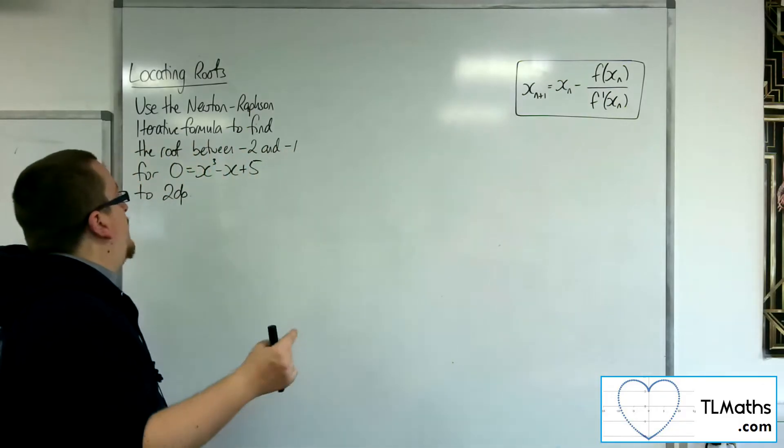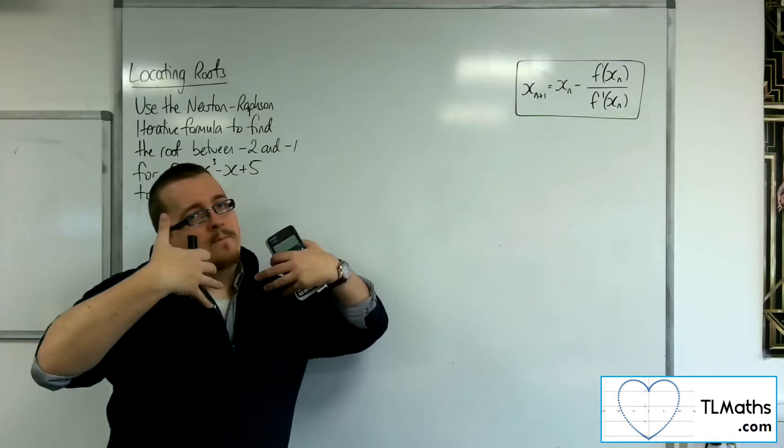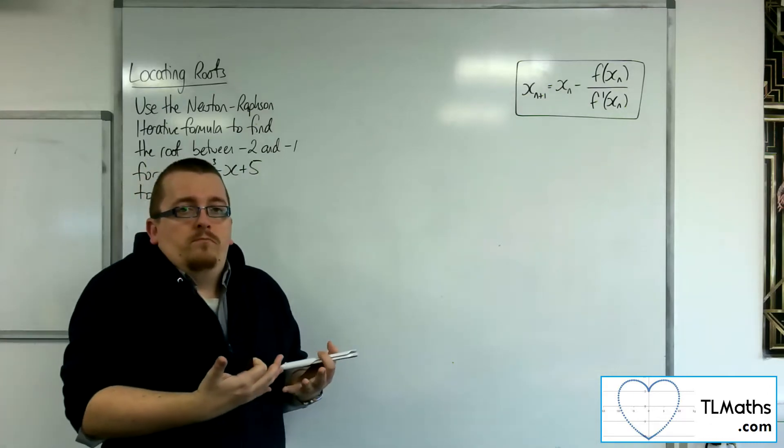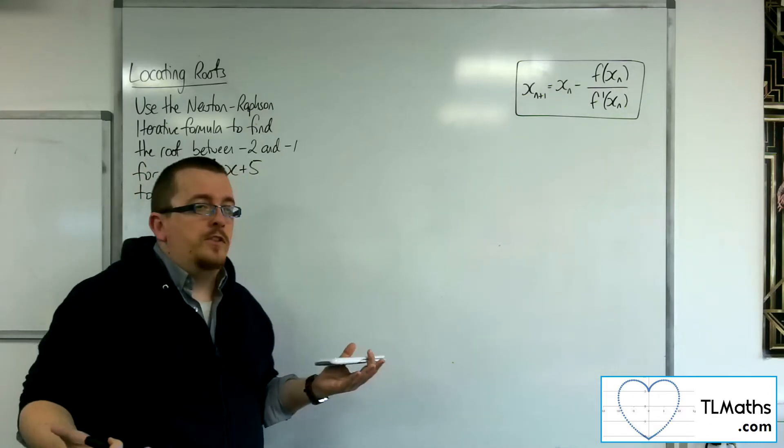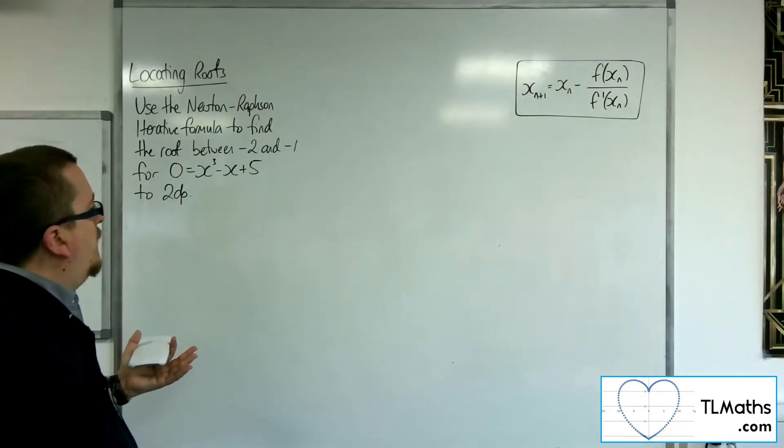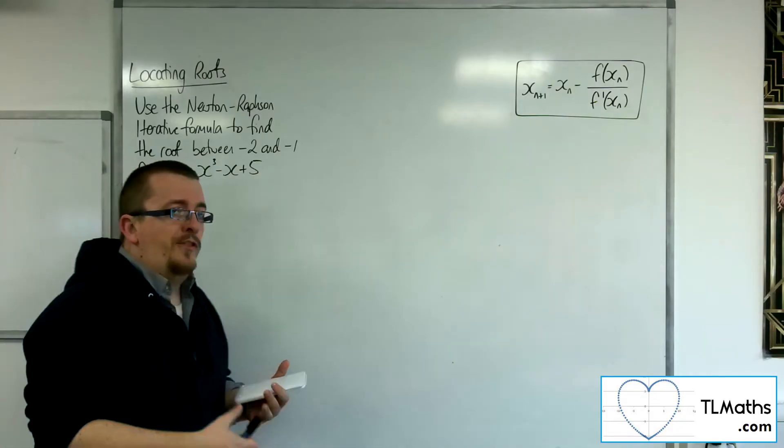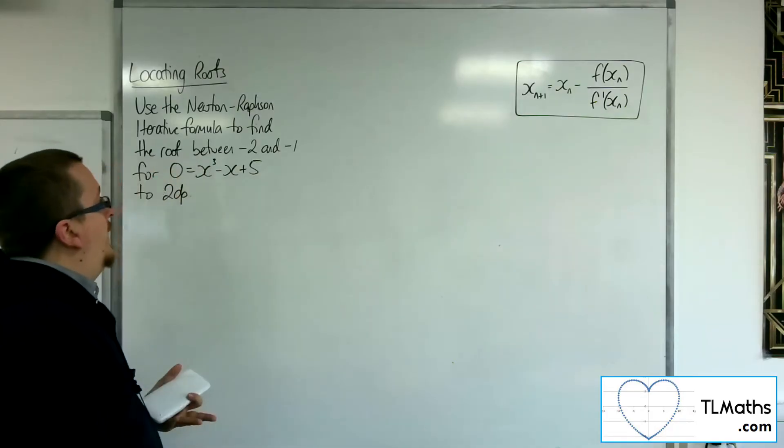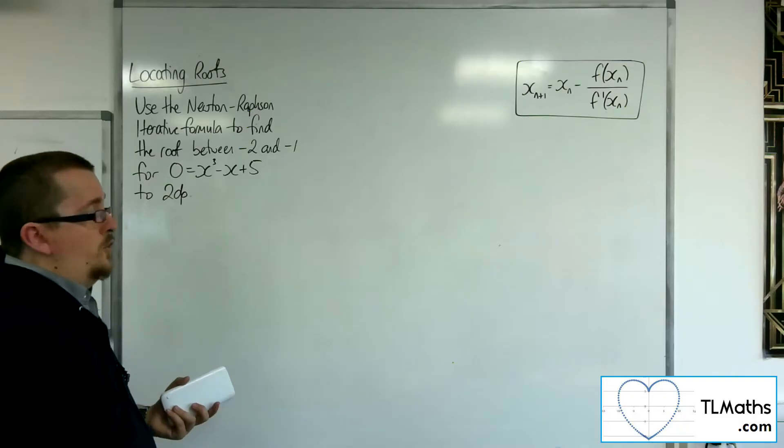Now I'm going to pick either -2 or -1 as my starting value for Newton-Raphson. What I'm going to do in this video is actually go through both. Really, you could just pick either of the two, but I'm going to go through both so you can see how quickly this can actually converge.